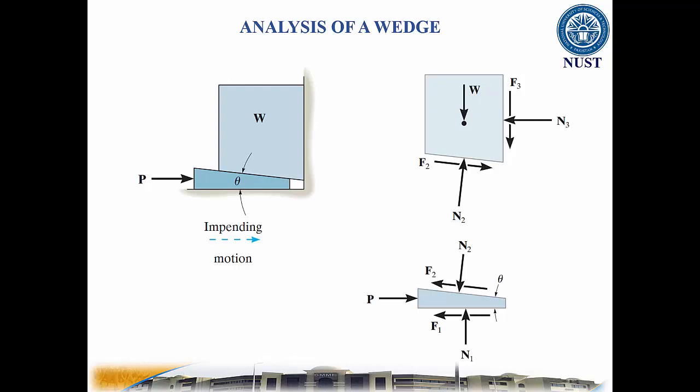To determine the unknowns, we must apply equations of equilibrium to the wedge and the object as well as the impending motion friction equation. Now of the two free body diagrams, which one should we start analyzing first? We should start analyzing the free body diagram in which the number of unknowns are less than or equal to the number of equations of equilibrium and frictional equations.